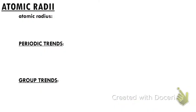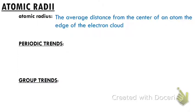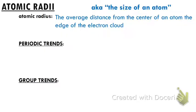Our first trend is atomic radius, or atomic radii. The textbook will tell you that atomic radius is the average distance from the center of an atom to the edge of the electron cloud, which is true. But really, when we talk about atomic radius, we're just trying to talk about the size of the atom — how big or small it is.